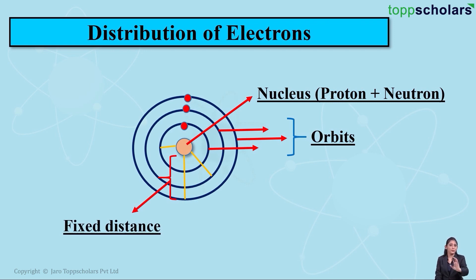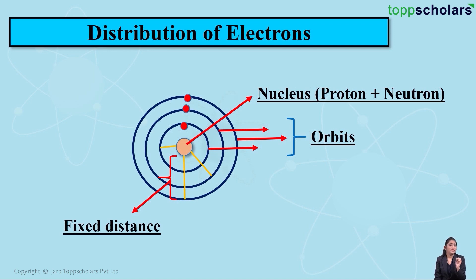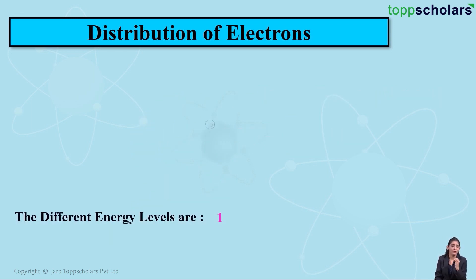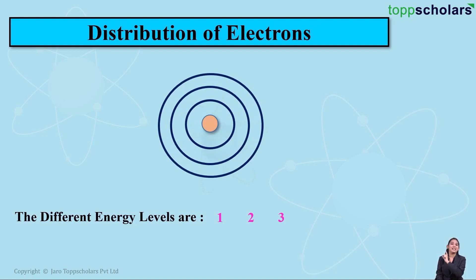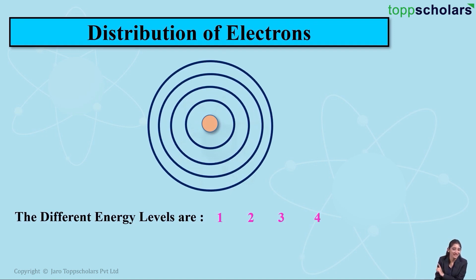These orbits are present at a fixed distance from the nucleus. The nucleus consists of protons and neutrons, electrons keep revolving in circular orbits, and these orbits are present at a fixed distance from the nucleus. But do all these orbits have the same energy levels? No — all these orbits have different energy levels. The first orbit is the first energy level, the second orbit is the second energy level, the third orbit the third energy level, and the fourth orbit the fourth energy level.